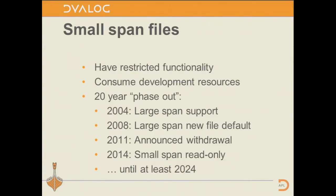The phase-out is a really long process. We started it in 2004 by introducing large span files. In 2008 we changed it to the default creation mode. In 2011 we announced that 13.0 would be the last version to fully support them. In 2014, if you try to use 14.0 with a small span file, you will only be able to read it — not write it. We will maintain that read support for at least another 10 years — a total of 20 years from start to finish — so you can still access files recovered from backups. But you need to convert them to large span.